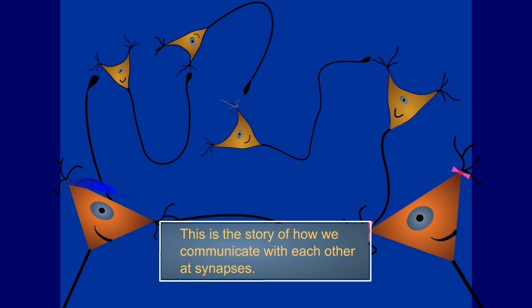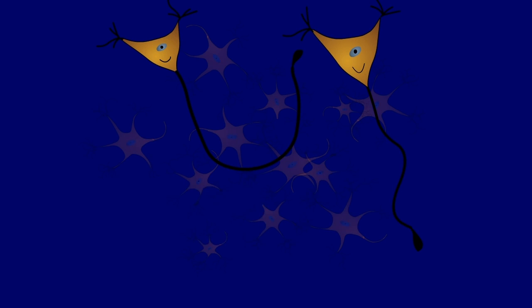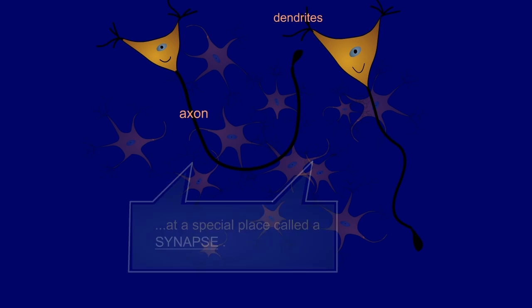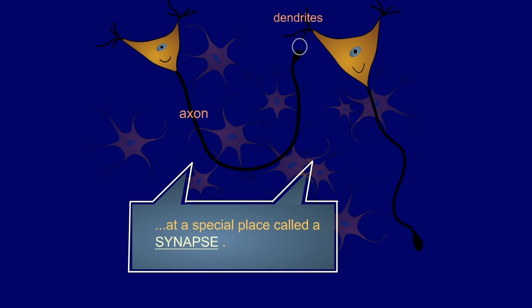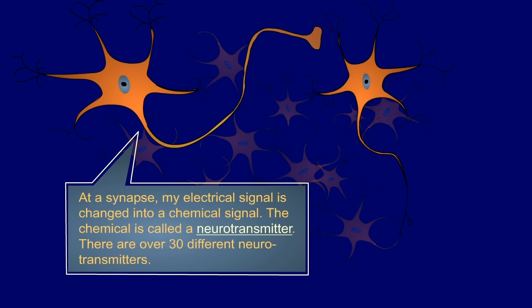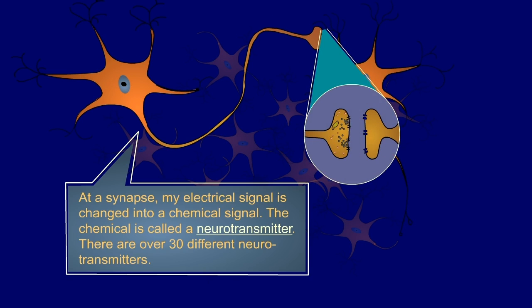This is how we communicate with each other at synapses. My axon signal. My dendrites. At a special place called a synapse, my electrical signal is changed into a chemical signal. The chemical is called a neurotransmitter. There are over 30 different neurotransmitters.